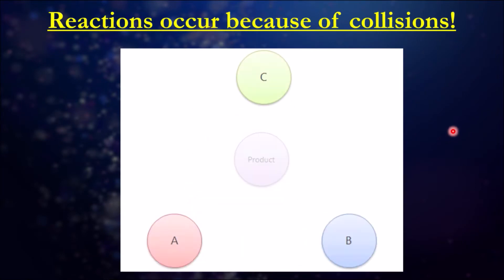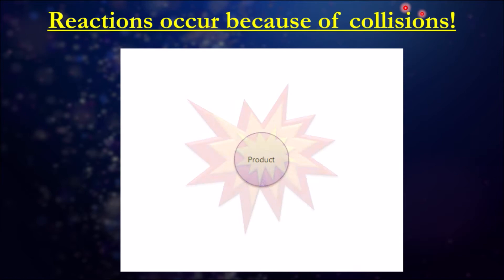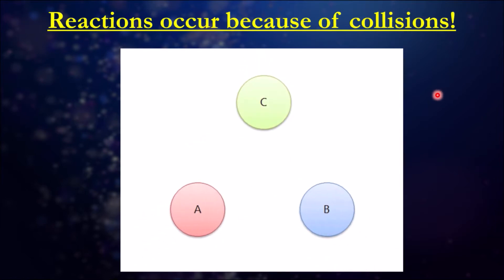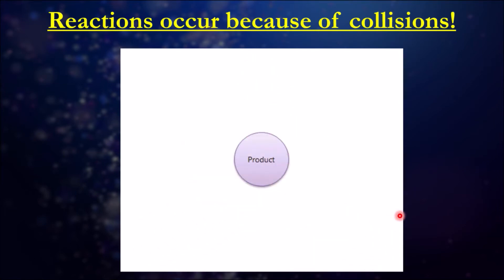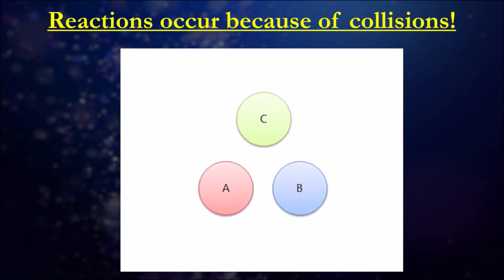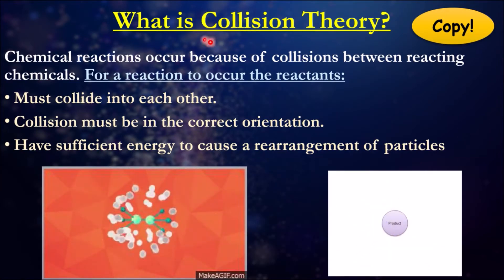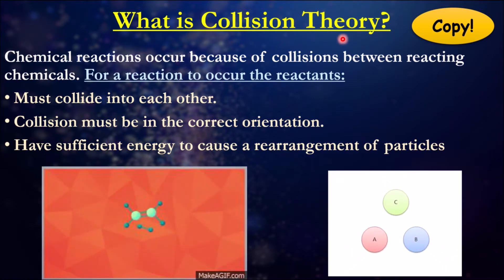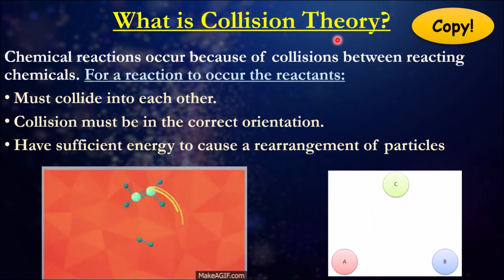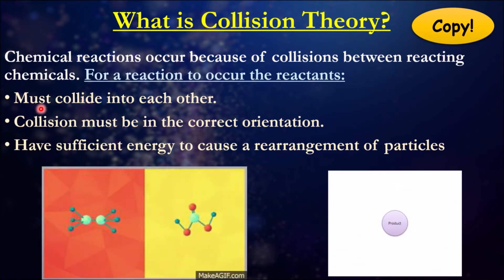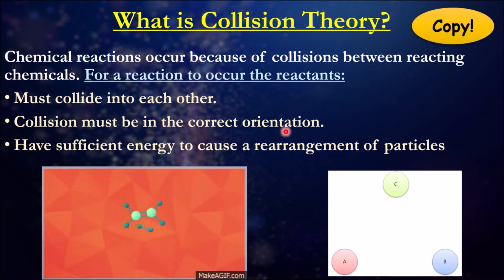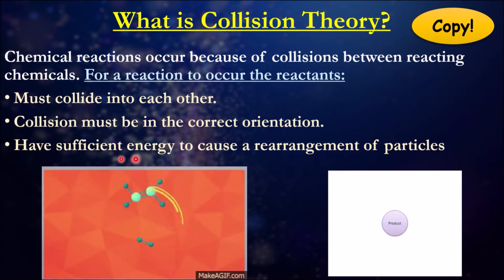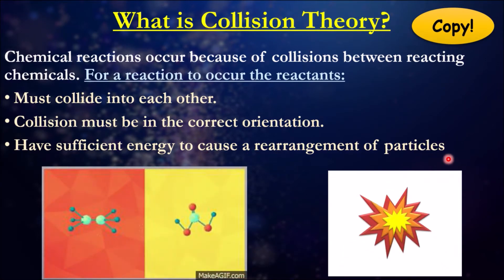Let's talk about how we can get chemical reactions to occur, and that is collisions. As stated in previous lessons, for a chemical reaction to occur it all has to do with how things collide with each other. There are three main important things in a chemical reaction. This falls under what we call collision theory, which explains and outlines how a chemical reaction will occur: the starting reactants must collide, these collisions must be in the correct orientation, and they must have sufficient energy to cause a rearrangement.